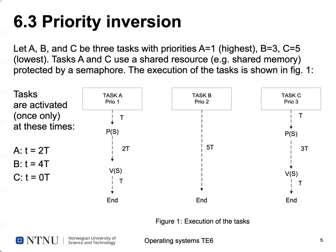Task A starts at time two. Task B is simple — no synchronization, just five time units from start to end, starting at time four. Task C also synchronizes on the same semaphore as task A: it runs one time unit, acquires the semaphore, runs three time units in its critical section, releases the semaphore, then runs one more time unit. Task C can start right away at time unit zero.